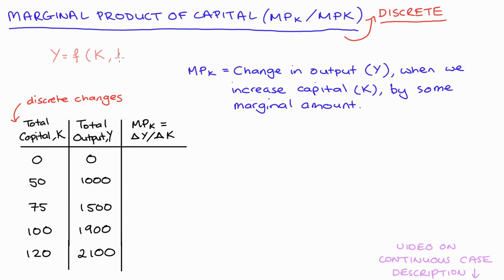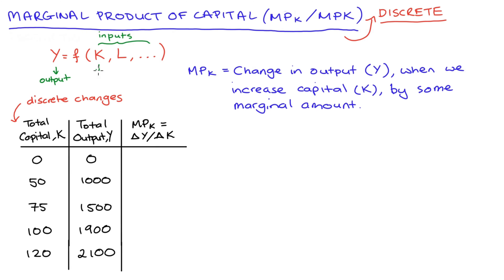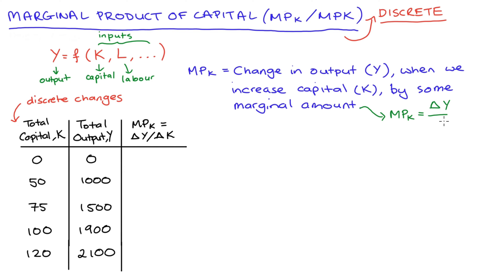To start, we recognize that economists model the output that a firm or an economy produces as a function of our inputs to production. Those inputs are typically capital K, labor L, and possibly other things like land. The marginal product of capital equals the change in output — the change in Y — when we increase our level of capital K by some marginal amount. Mathematically, we take the discrete change in output and divide it by the discrete change in capital. This is all done ceteris paribus, so all other inputs — labor, land, everything else — are held constant; we're only changing our level of capital and seeing what happens to Y.